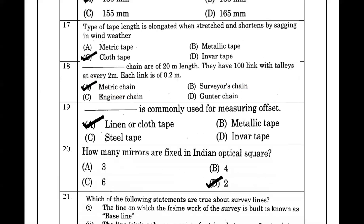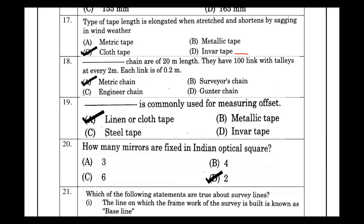The invar tape is the most accurate for measuring distance. In a metric chain of 20 m length, there are 100 links with tallies at every 2 m. Each link is 0.2 m.